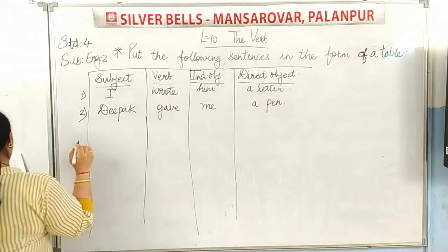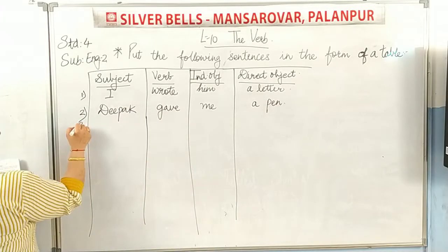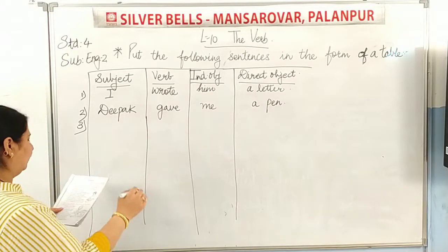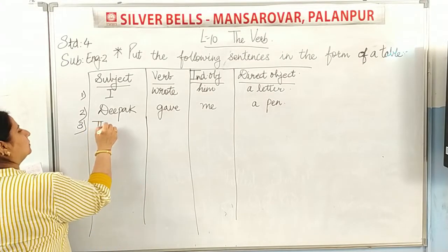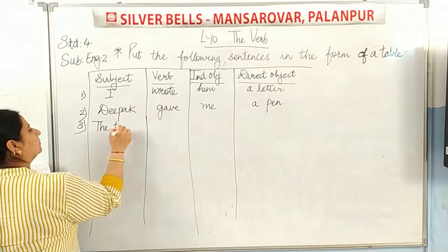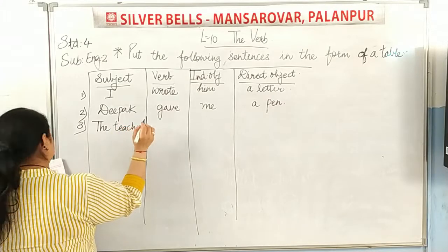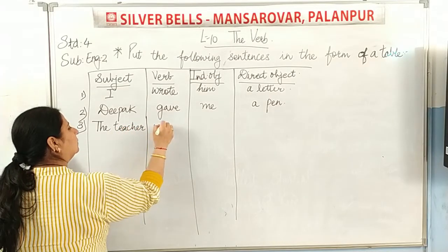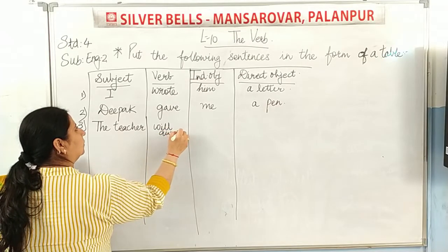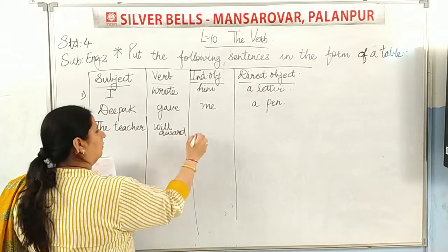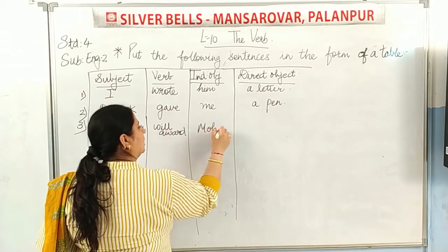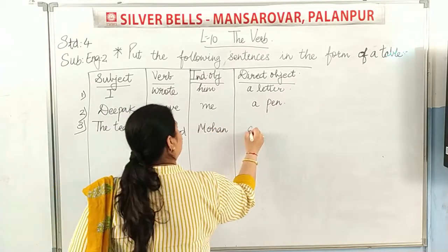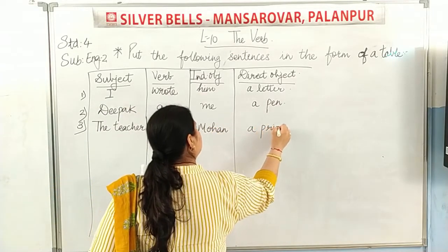The second sentence: 'The teacher will award Mohan a prize.' The teacher is the subject, will award is the verb, Mohan is the indirect object, and a prize is the direct object.